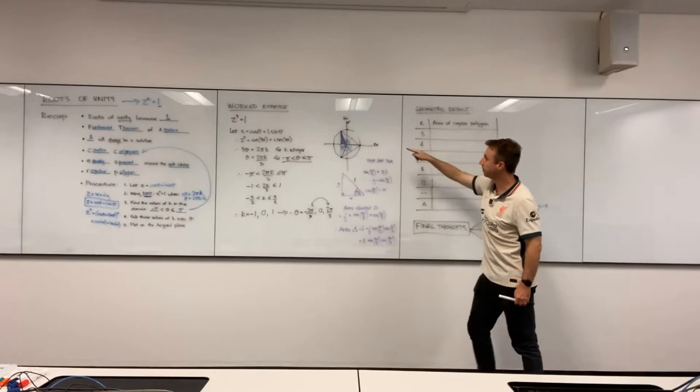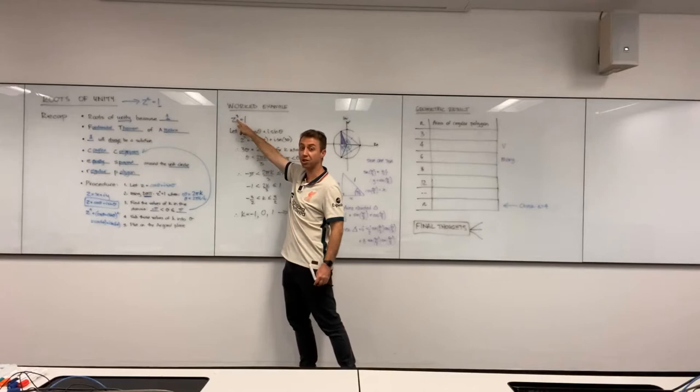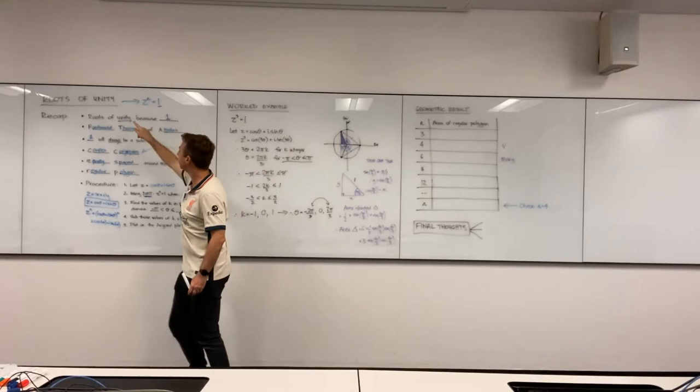Because what you're going to do now is do this for different values of n, and then we're going to try and generalize. Whilst it was 3 sin π/3 cos π/3 when n was 3, can we generalize and find a generic result for the area of a regular polygon that's inscribed in the unit circle for any value of n? And we're going to see that we can do that using our roots of unity technique.